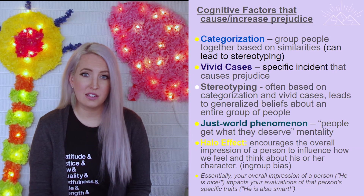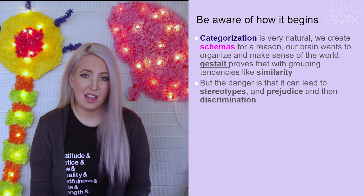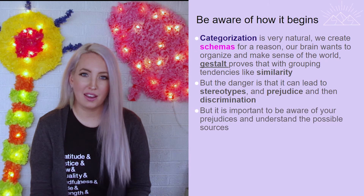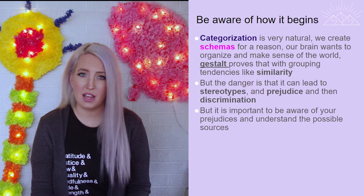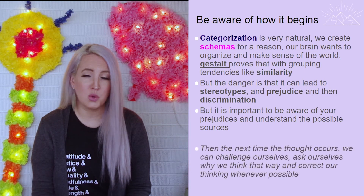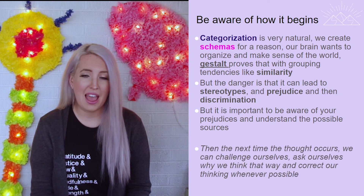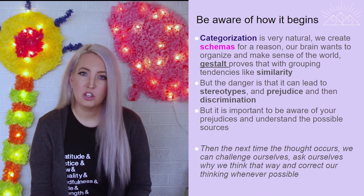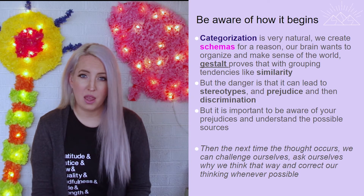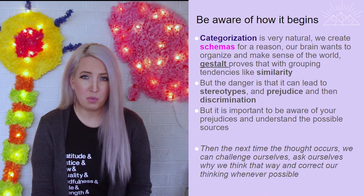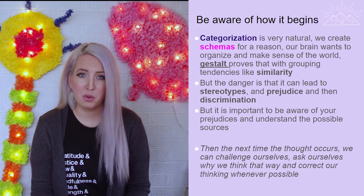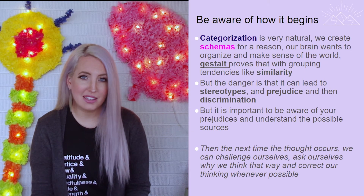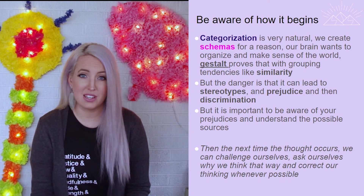These are the social and cognitive factors that can lead to prejudice and eventually discrimination. It's important to recognize that we all do this — our brains are primed to categorize and create schemas, which can lead to generalizations, stereotypes, and prejudice. So it's important to be aware of the sources, so when we have a prejudiced thought we can question where it originated and challenge cognitive biases in order to combat prejudice as a whole.